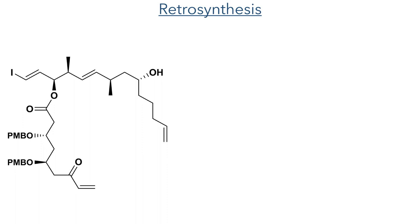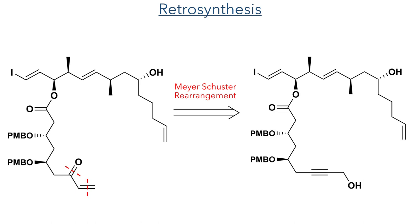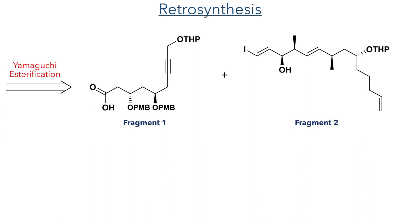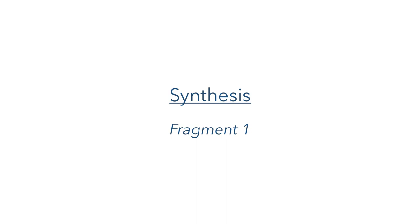The enol required for the cyclization could be synthesized using a Meyer-Schuster rearrangement of a propargylic alcohol, while the ester essential for the macrolactone structure would be introduced using a Yamaguchi esterification. This leads back to two separate fragments: the first could be synthesized from a simple alcohol, while the second could be derived from epichlorohydrin. So let's start with the synthesis of Fragment 1.